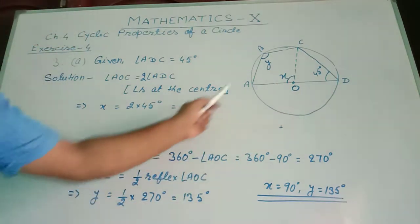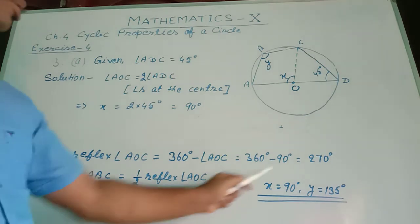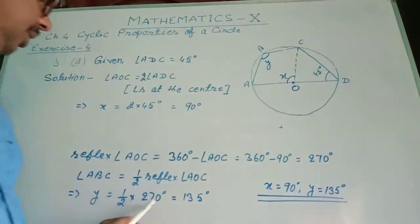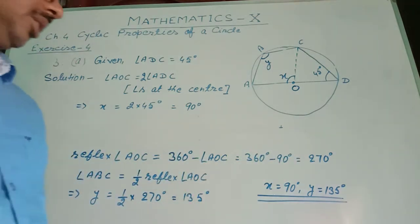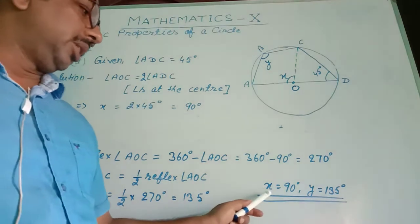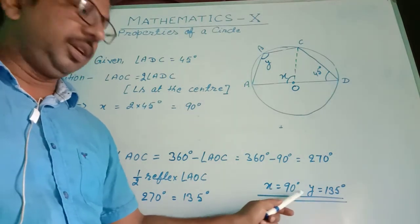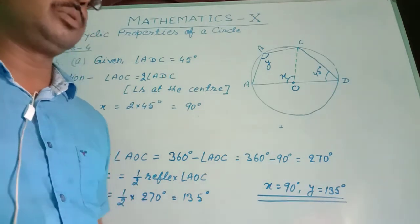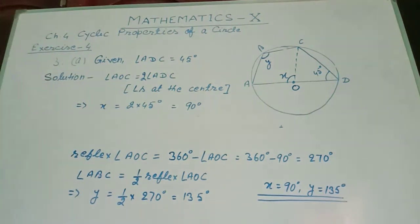Angle ABC is Y. So Y equals half of 270 degrees, which equals 135 degrees. Therefore, the values are X equals 90 degrees and Y equals 135 degrees. These two are the answers.